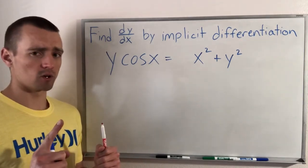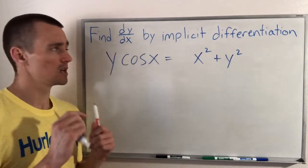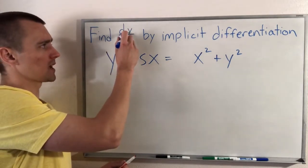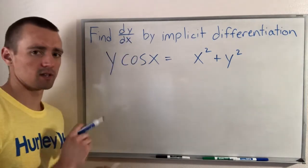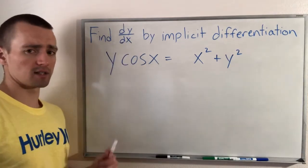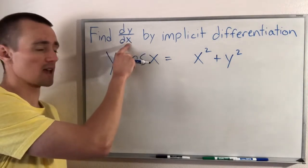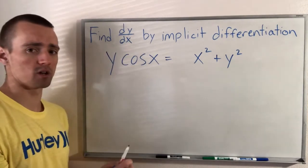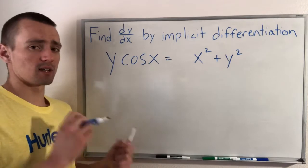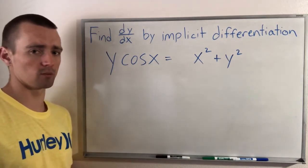First thing you want to do when you see any question like this is look at what it's asking you to find, which in this case is dy/dx. This is important because it indicates a couple things to us. You want to look at what letter is on the top and the bottom of this indicator here. It's telling us to find the derivative of y with respect to x. So that tells us that y is a function of x, and x is an independent variable, or the input of our function y. So y is our output, x is our input. This is important because it's going to tell us how to treat x and how to treat y when we apply implicit differentiation.